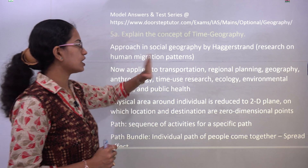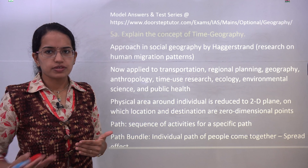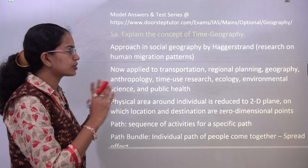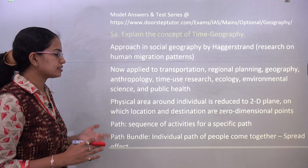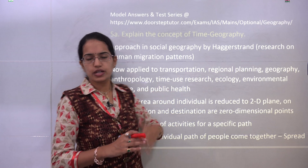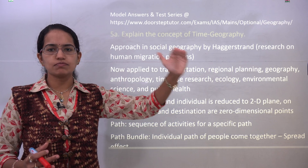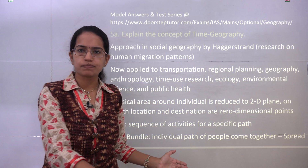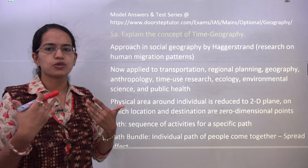The first question asked was the concept of time geography. This is a common approach given by Hagerstrand in the ideas of social geography. He talked about the 2D space, the path and the path bundle. Path is basically the sequence of activities that are done. For any development — landform development, landform evolution or any other phenomena — you have the time-space that you are talking about, studying how things have changed over time on the space, which is what we study under the concept of time geography.